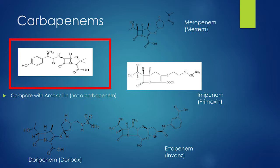Moving on to carbapenem antibiotics. You can see the core beta-lactam ring structure, but with a different ring structure. What really makes carbapenems so broadly effective is these unique side chains — compared to the original penicillin which has no side chains.